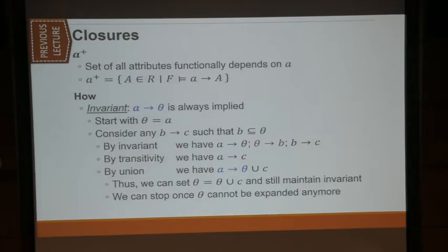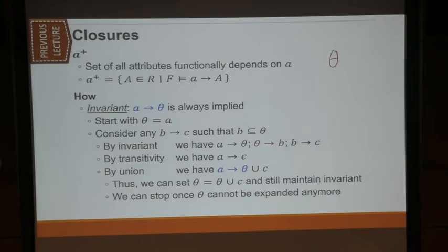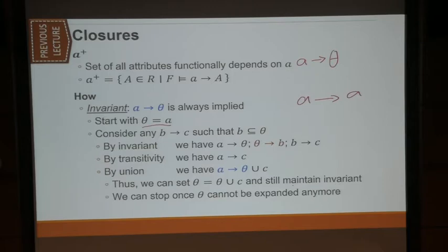This is the attribute closure, and this is how we derive it — we still use the Armstrong axioms, but in a very unique way. We start with the notion of an invariant: we say that A to θ is always implied. We start by setting θ equal to A, so A to A is always implied — it is trivial by reflexivity. Then we want to expand θ to be as large as possible until we arrive at A+.